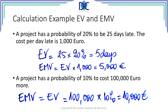When the risk really happens, the project will not be five days late but it will be twenty-five days late, and the cost will not be five thousand euro but it will cost us twenty-five thousand euro. This is a big and important issue to take into account — the probabilistic approach of the risk versus the actual cost when the risk would occur.